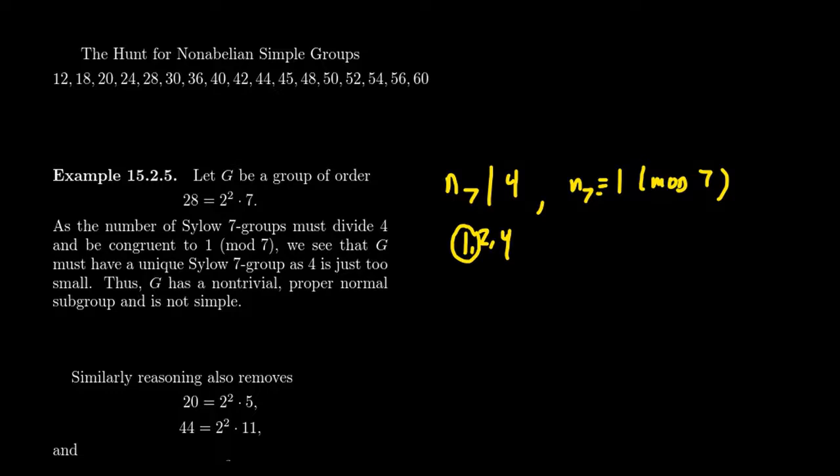And as such, every group of order 28 is going to have to have a unique Sylow 7 subgroup, again because the other factor is too small. That unique Sylow 7 subgroup is going to have to be normal. And so this is not a simple group. So 28 is removed from our list.